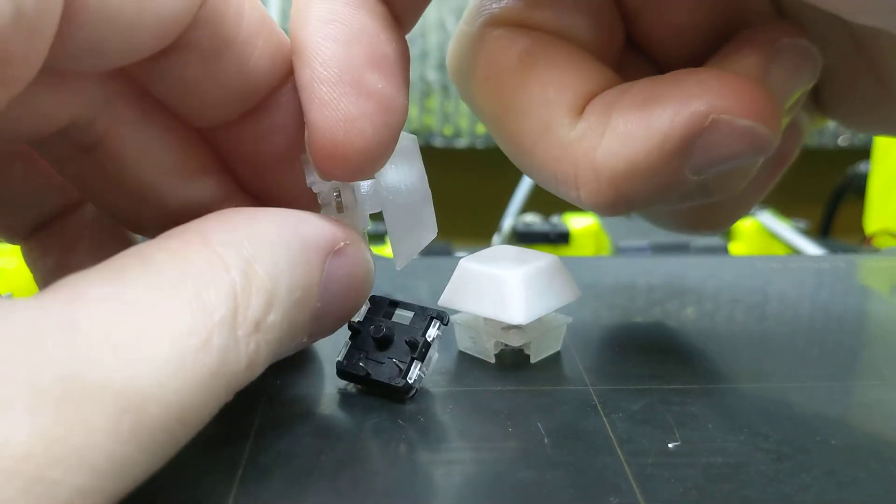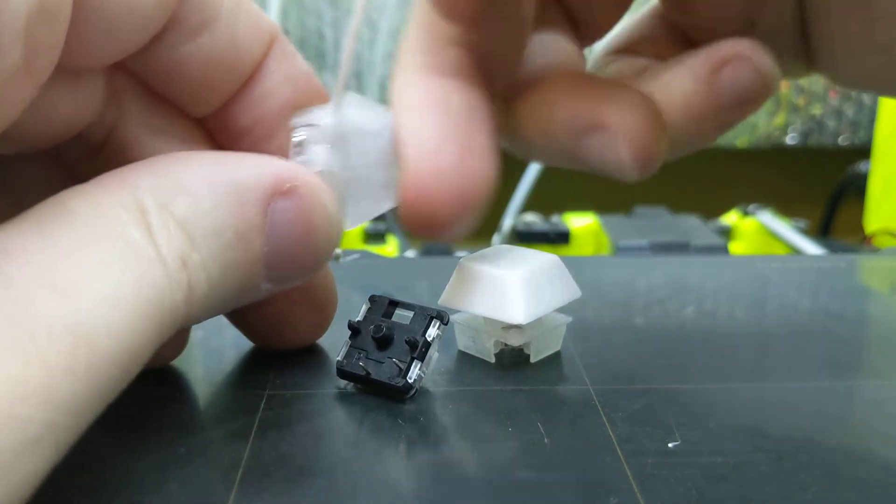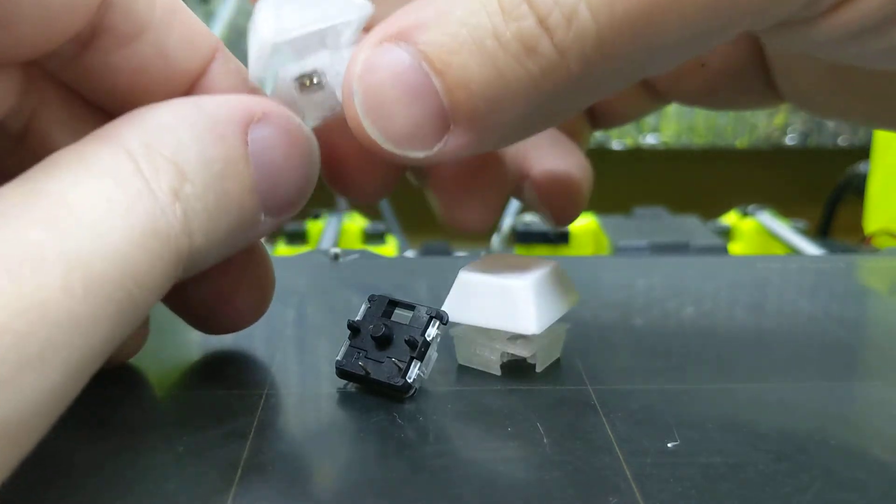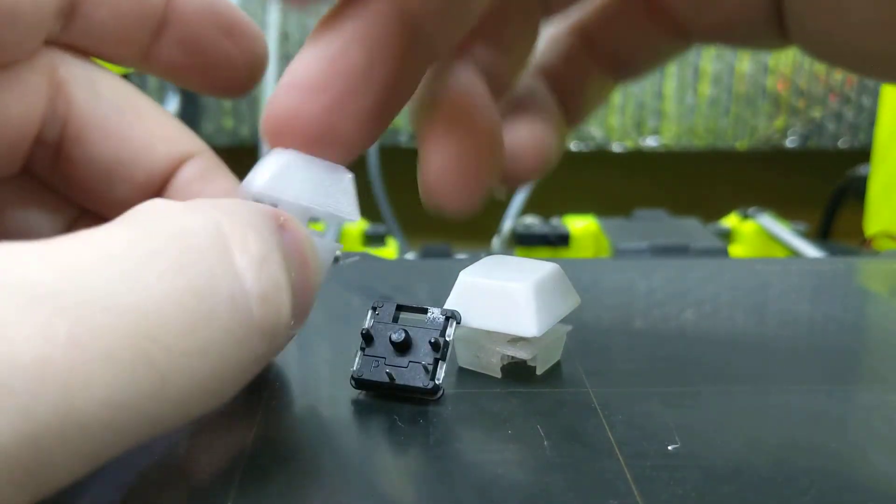And of course, if you increase the amount of material that resides above the magnet and the stem, this will reduce the initial force. So if you're looking for a 32 grams of force, reasonably low-profile switch, I got you right here.